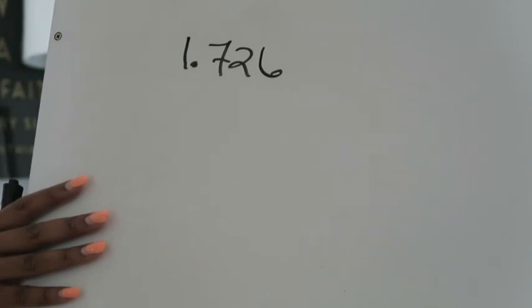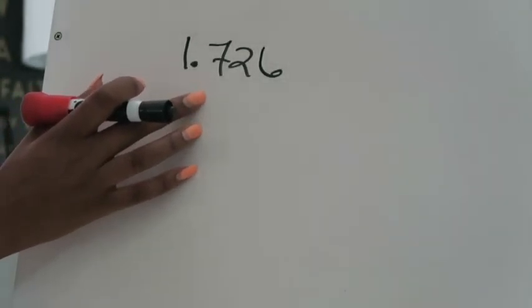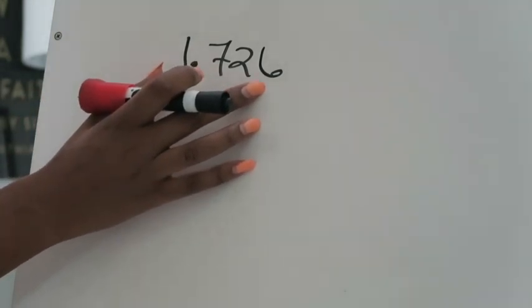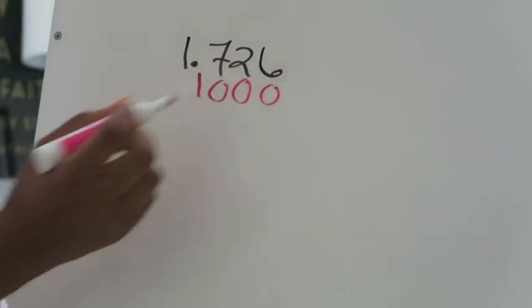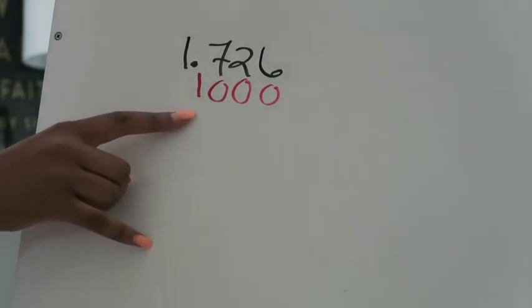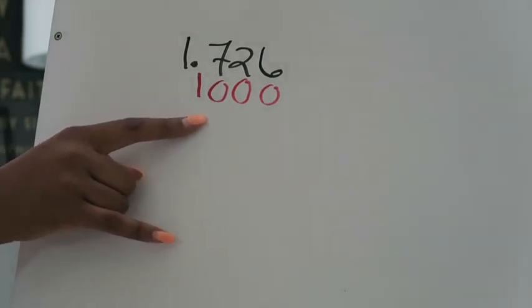So here we have 1 and 726 thousandths. Before moving forward, here's a handy trick: when working on these problems you've got to know what place value position the decimal goes to. You can always put a one under the decimal point and then zeros underneath the following digits. That helps you identify what place value the decimal goes up to and each digit's place value position.